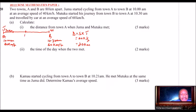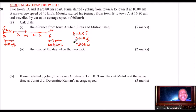Let's say they met at point M. If we say that distance from the 20 km mark to where they met is X, then the remaining portion will be 60 minus X. An important concept here is that the time Juma took from the 20 km point to the meeting point is the same time Mutuku took from B to the meeting point.